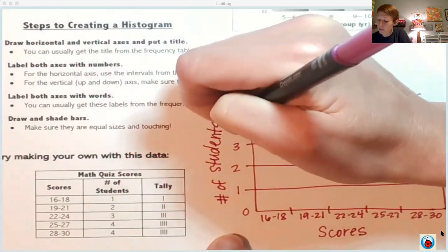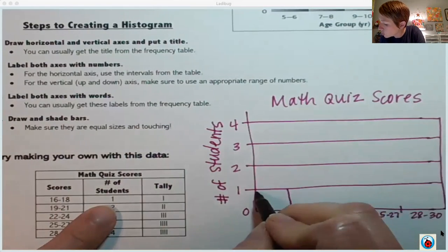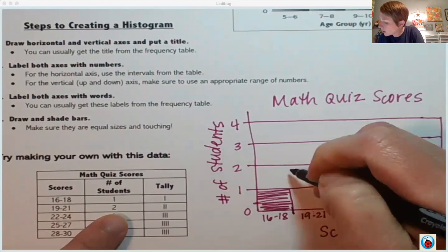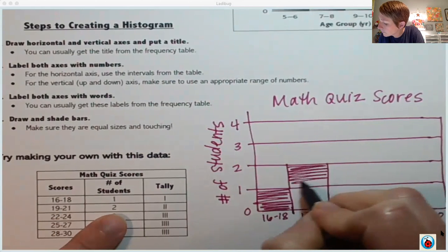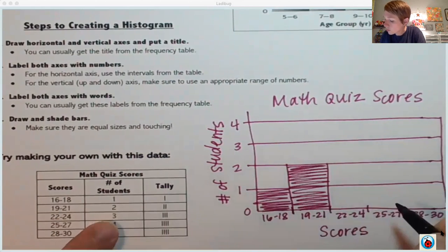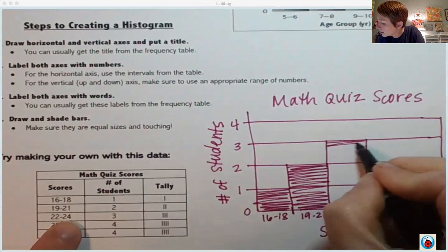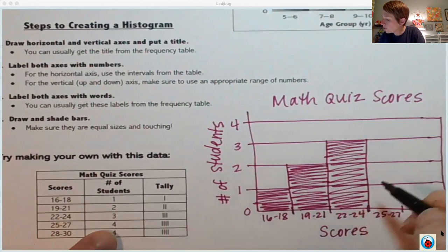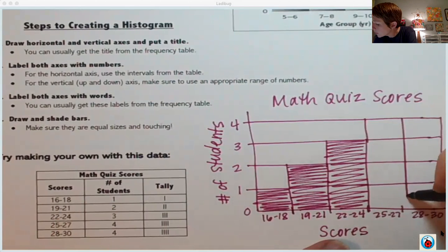Now I'm ready to put my bars. 16 to 18 only goes up to one. Make sure it's shaded. It doesn't have to be perfect. 19 to 21 goes up to two. 22 to 24 goes up to three. And then my last two both go up to four. So I'm going to split this pretty evenly there. I'll help fix that line at the bottom there.